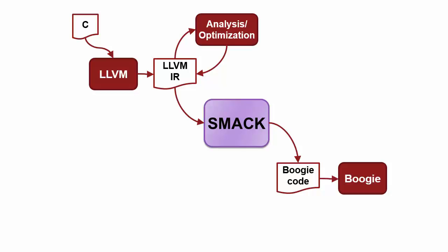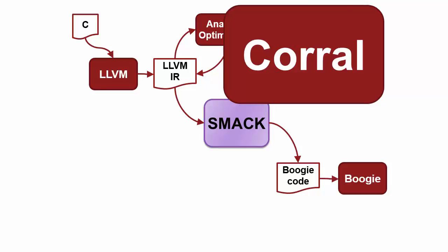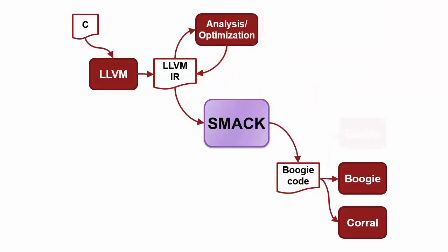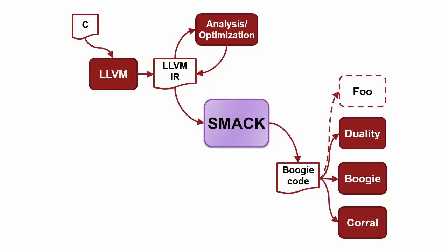The SMAC framework started out originally with support for the original Boogie IVL back-end, which confusingly is also called Boogie. Later, support for a back-end called Corral, which leverages the Boogie API, was added, followed by the Duality back-end. As more tools begin to embrace Boogie IVL, the back-end support available in the SMAC framework will grow.